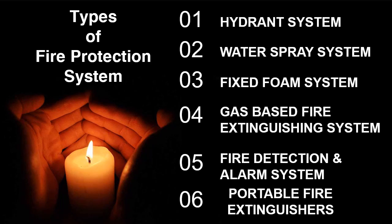We will see the types of fire protection systems: hydrant system, water spray system, fixed foam system, gas-based fire extinguishing system, fire detection and alarm system, and portable fire extinguishers. We will discuss each of them one by one.